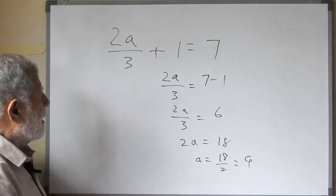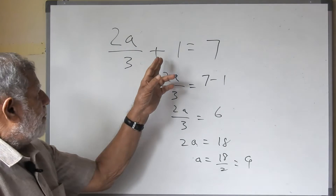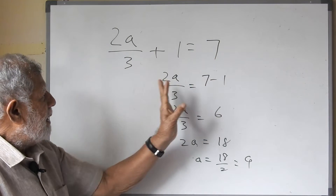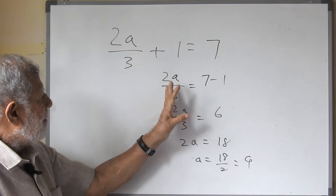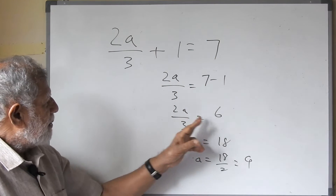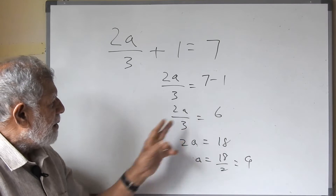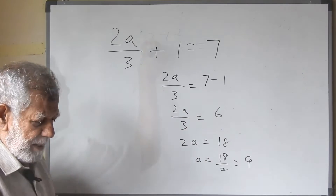So 2a is equal to 18, and a is equal to 18 upon 2, that is equal to 9. What we did was bring the number to the other side so that it becomes a fraction on each side, and then we can easily cross-multiply.